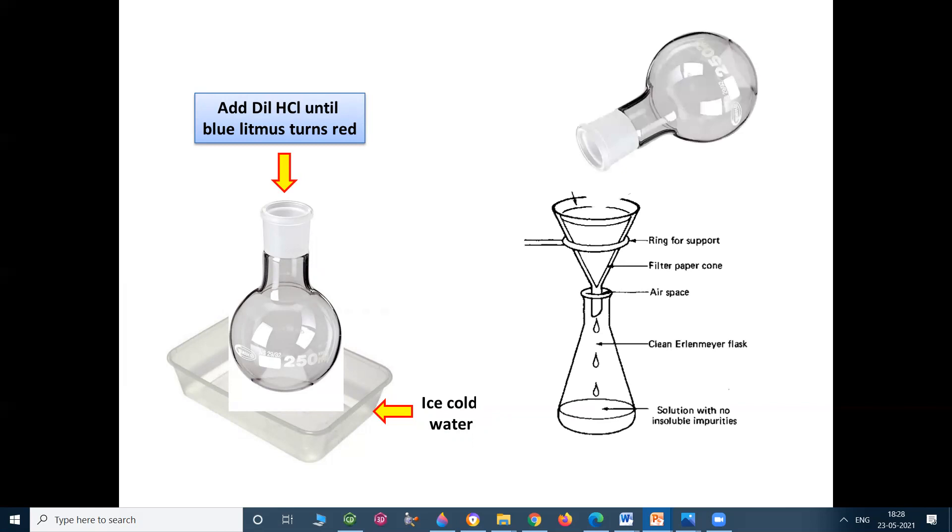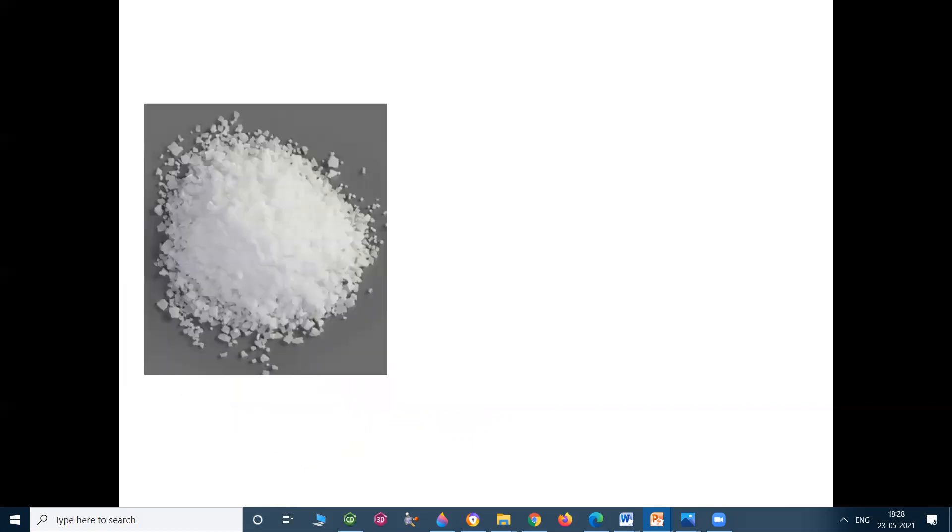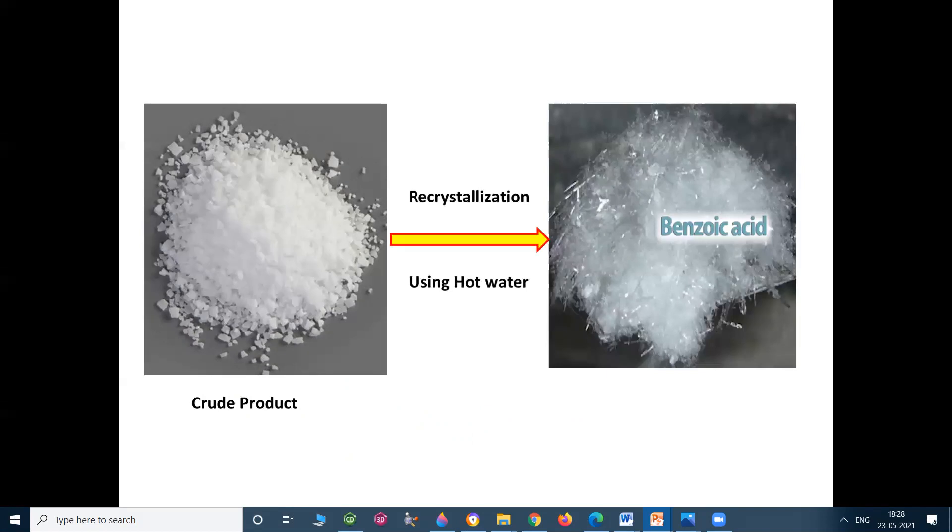Then filter the product by using filter paper and conical flask. After that we get the crude product. The crude product on recrystallization using hot water gives shiny crystals of benzoic acid.